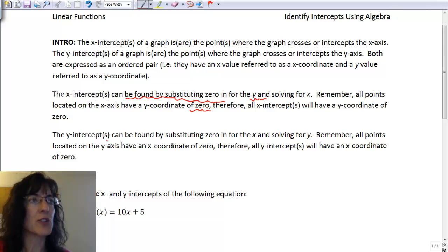If you're trying to find the y-intercept, you put in 0 for the x. So the opposite of the one that you're trying to find. And all points that are on the y-axis have an x-coordinate of 0. So all the y-intercepts will have an x-coordinate of 0.